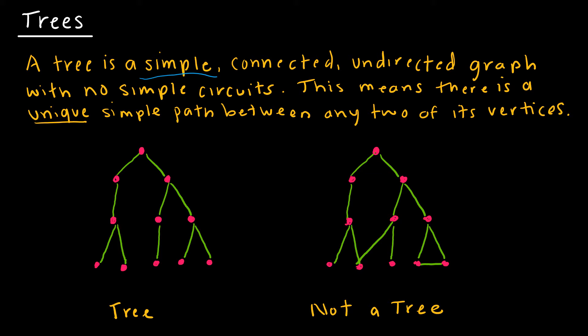It has no simple circuits which means we know what a circuit is where you can connect from one to the other and back to the beginning. Essentially what this means is there is a unique simple path between any two vertices. So this guy down here and this guy down here, the only way I can get from one to the other is along this path.